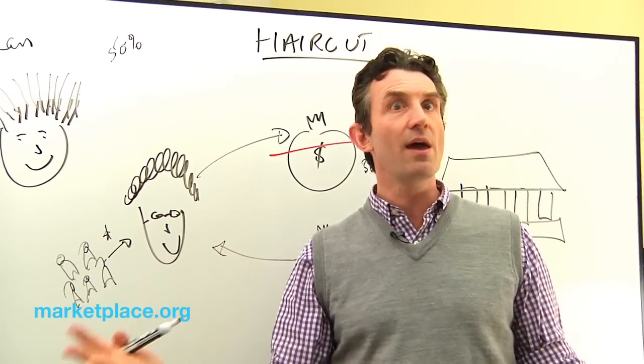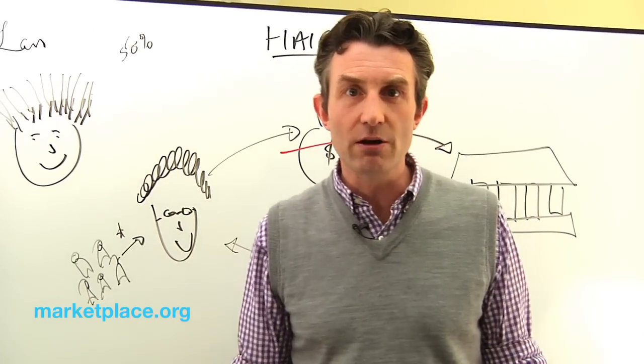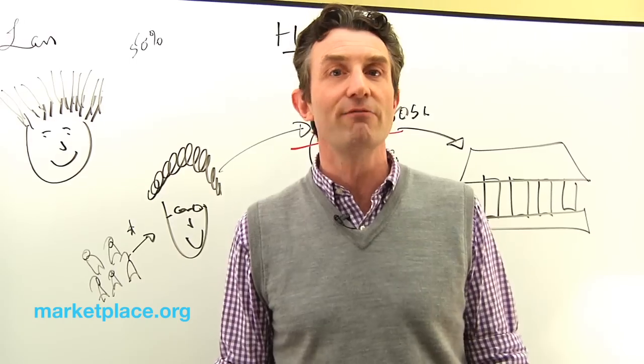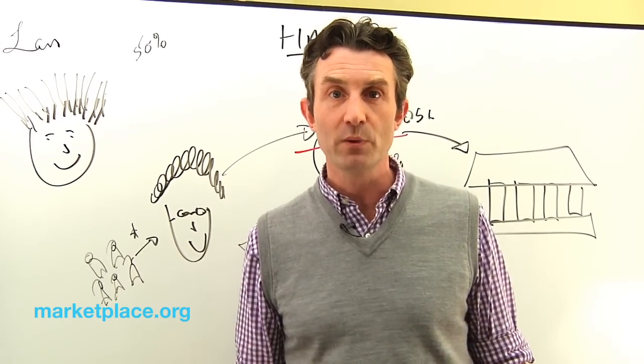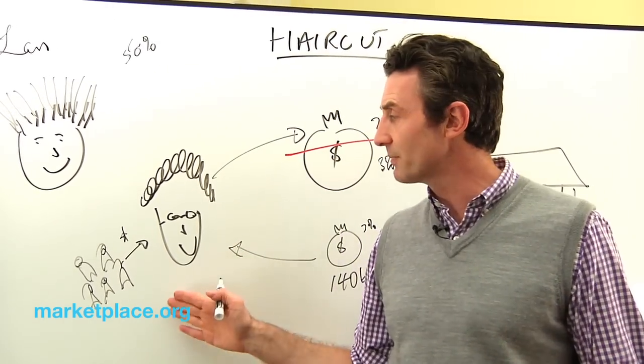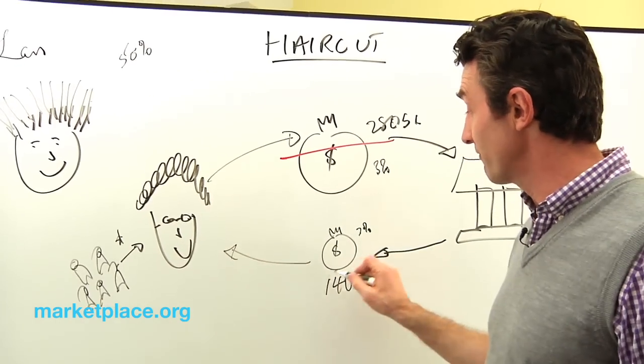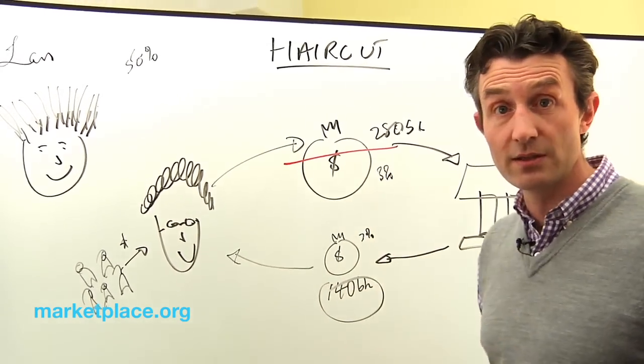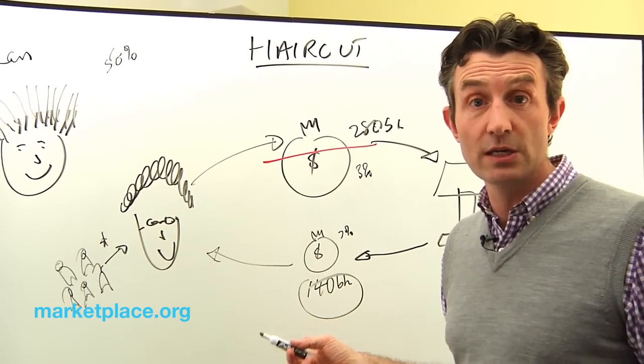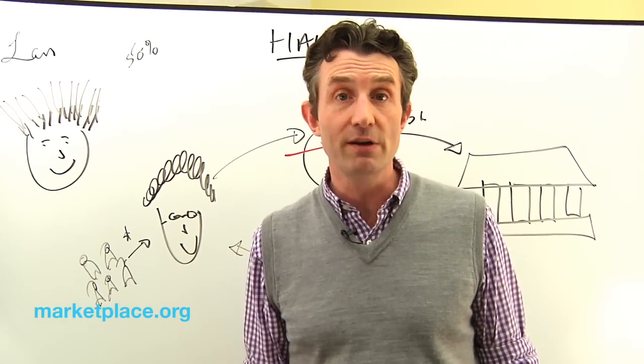So these depositors might say, hey, there's a chance we're not going to get our money back. Let's run down to the bank and see if we can get our money back. It might be a run on the bank. We might find people queuing up to try and get the money out of the banks because they believe that they're not going to get their money back because these banks aren't going to be able to find this $140 billion that they've lost to the Greek government.